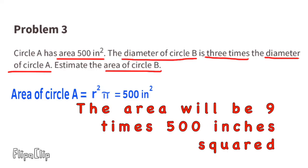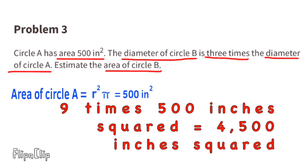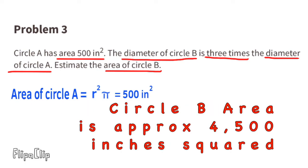Nine times 500 inches squared is 4,500 inches squared, so the area of Circle B will be about 4,500 inches squared.